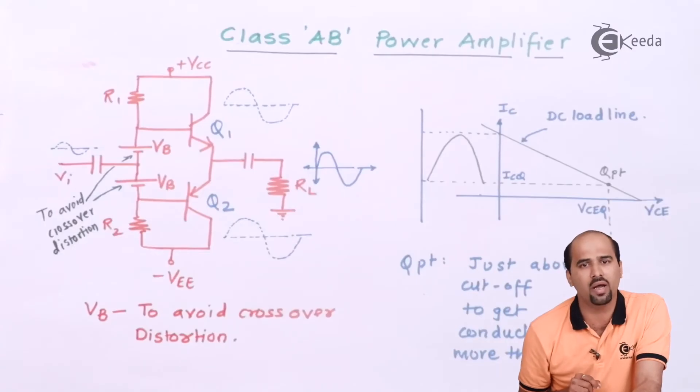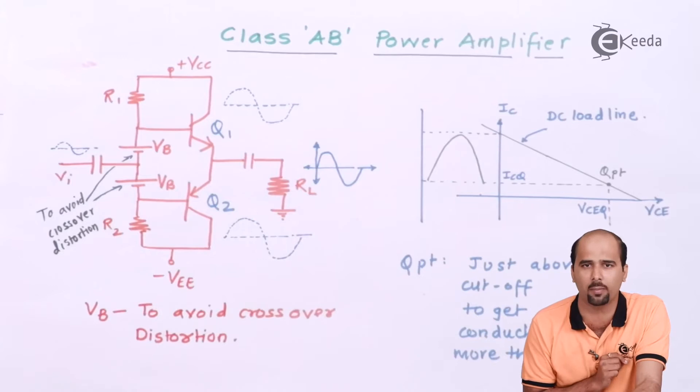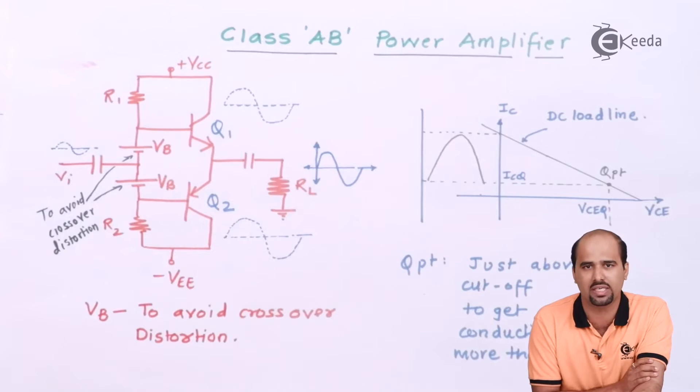As we all know that power amplifier of class B suffers from the crossover distortion. Even if I'm using push-pull power amplifier, harmonic distortion, some extent I can reduce but crossover distortion is making something different for class B power amplifier. What we'll have to do?